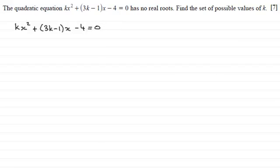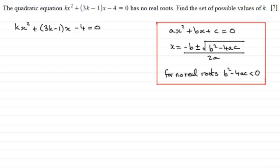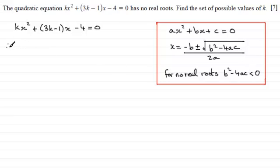Now you should be familiar with finding roots of a quadratic equation. If you've got a quadratic of the form ax squared plus bx plus c equals 0, we can use the quadratic formula to locate those roots. But if b squared minus 4ac — often called the discriminant — is a negative value, you'd get an error trying to square root a negative value. In other words, we have no real roots if b squared minus 4ac is less than 0.